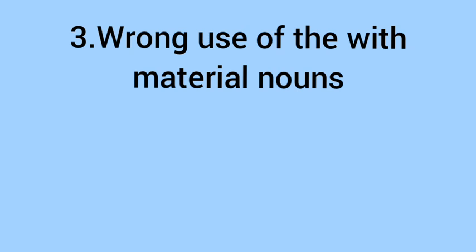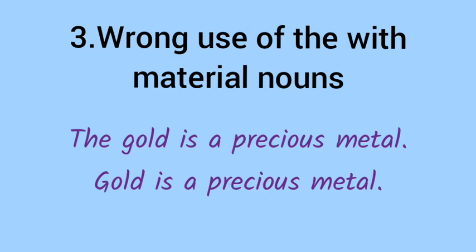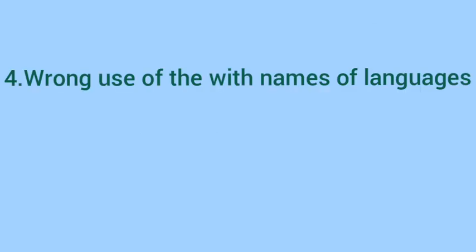Number 3: Wrong use of 'the' with material nouns. Kabhi kabhi hum material nouns se pehle bhi 'the' laga dete hain, jisse hamara sentence wrong ho jata hai. 'The gold is a precious metal' — this is wrong. 'Gold is a precious metal' is right. Material nouns se pehle 'the' nahi lagana hota hai.